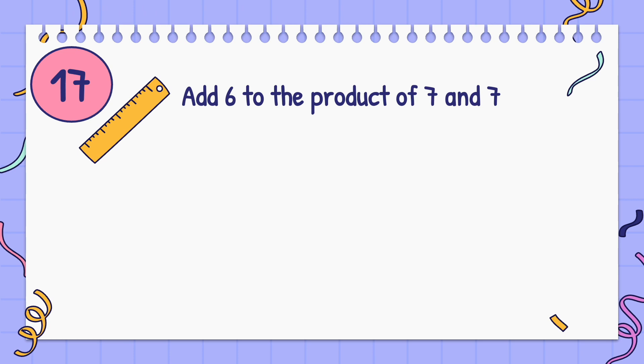Add 6 to the product of 7 and 7. Answer: 55.